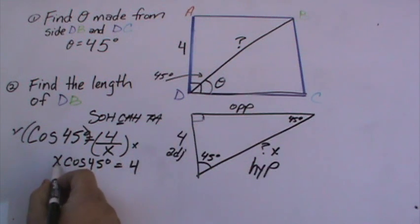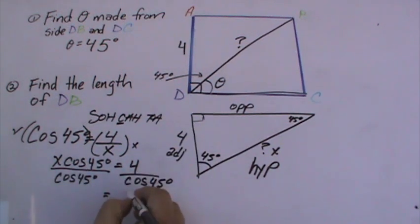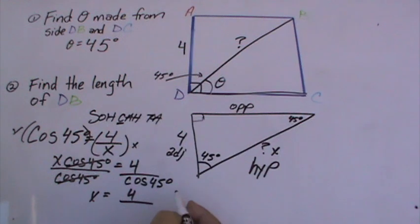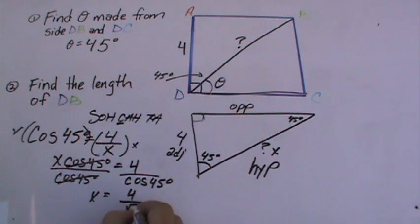We want x by itself on this side, so we're going to divide both sides by cosine 45 degrees. What is cosine of 45 degrees? We have to think back to the unit circle. Cosine of 45 degrees is square root of 2 over 2.